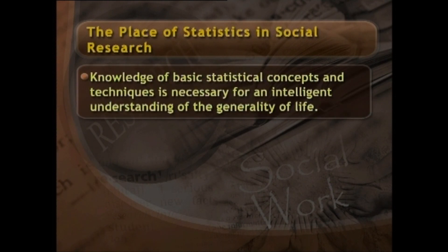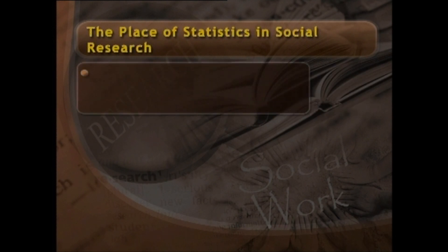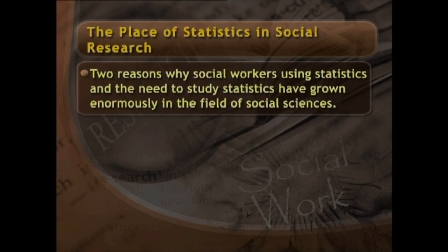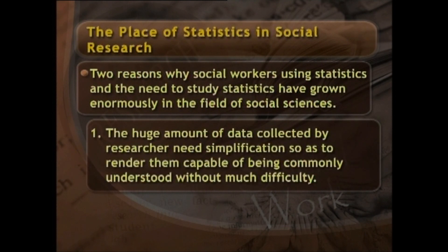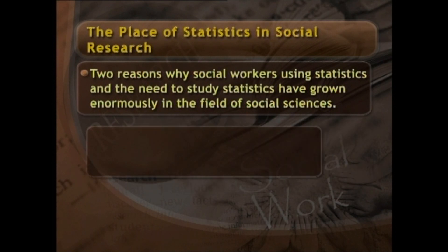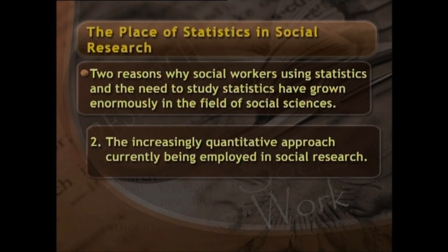The place of statistics in social research: knowledge of basic statistical concepts and techniques is necessary for an intelligent understanding of the generality of life. There are essentially two reasons why social workers use statistics and the need to study statistics has grown enormously in the field of social science. One reason is that the huge amount of data collected by researchers needs simplification so as to render it capable of being commonly understood. The second and even more important reason is the increasingly quantitative approach being employed in social research.